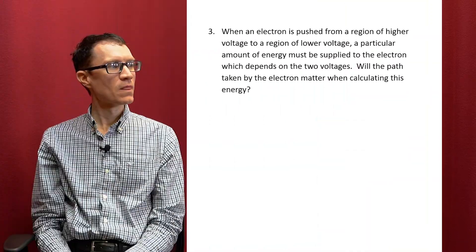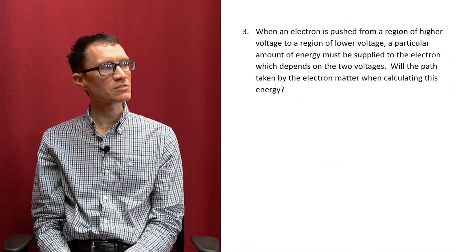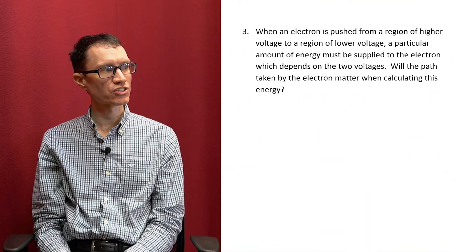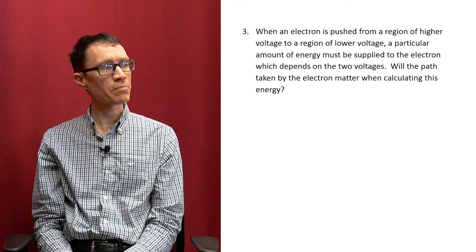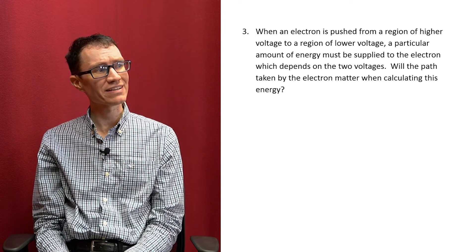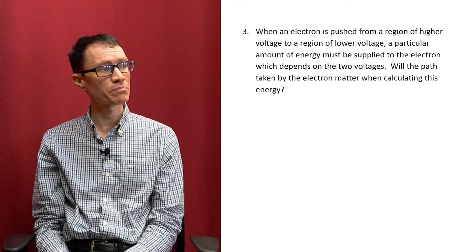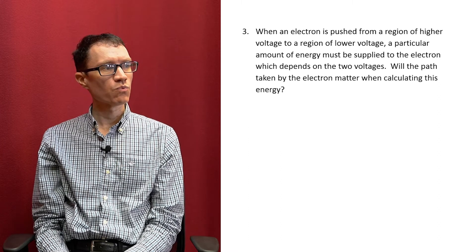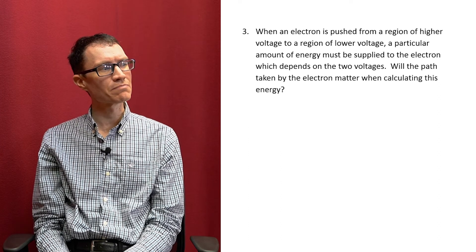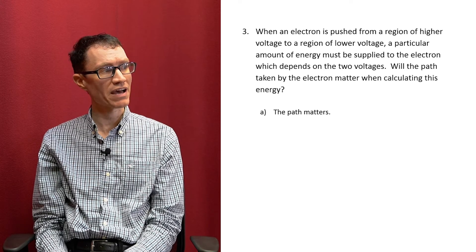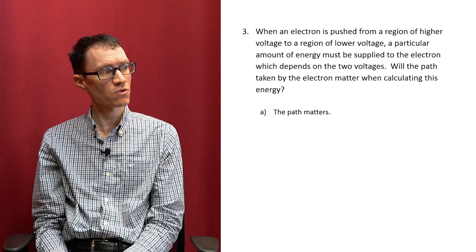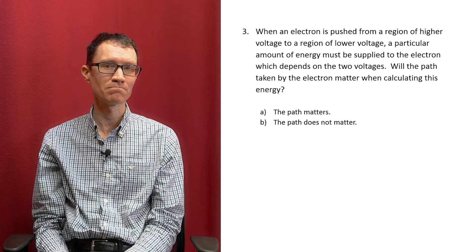Let's take a look at the third problem. When an electron is pushed from a region of higher voltage to a region of lower voltage, a particular amount of energy must be supplied to the electron, which depends on the two voltages. Will the path taken by the electron matter when calculating this energy? A: The path matters. Or B: The path does not matter.